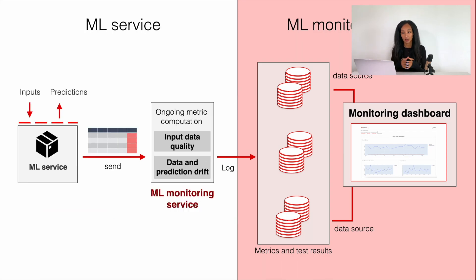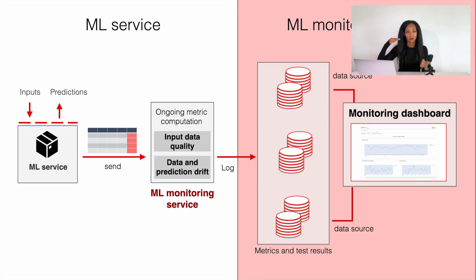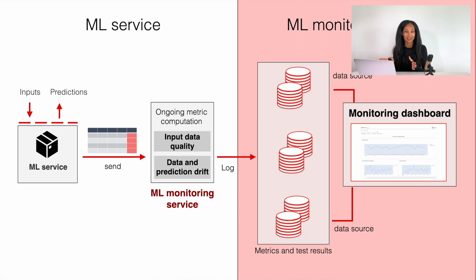The alternative scenario is to have an online machine learning monitoring system. In this case, you want to send your data to the monitoring system directly — for example, as soon as you receive requests to your machine learning model service and the model generates output, you send this data. You can do it request by request, or accumulate several requests and send small batches or mini-batches to the machine learning monitoring service. You need to have an implementation of metrics calculations and then still store this data somewhere. In this case, you would want to use a time series database, for example Prometheus, ClickHouse, or any other database you use for monitoring.